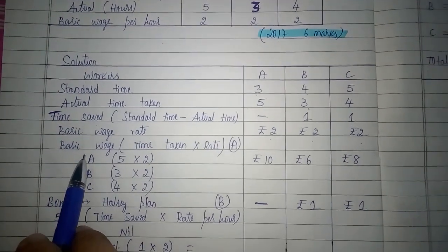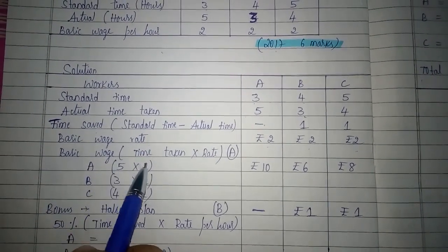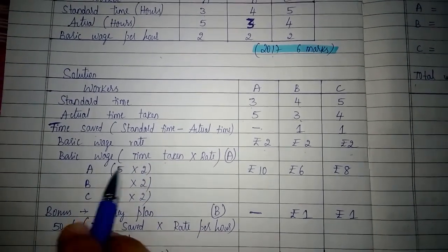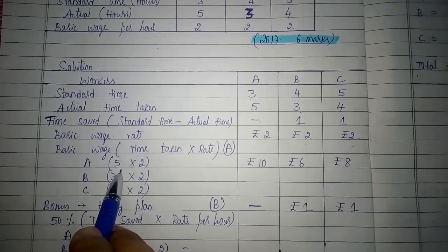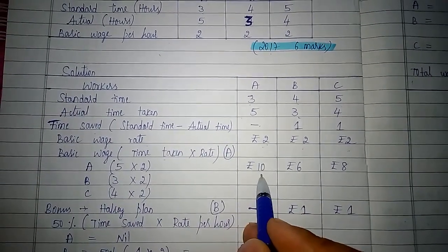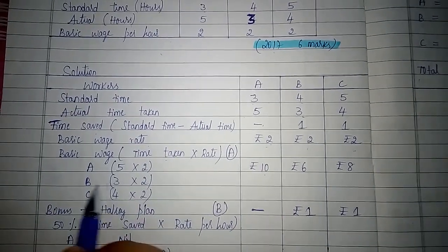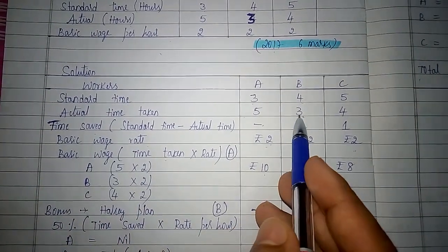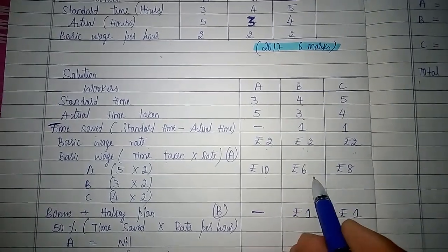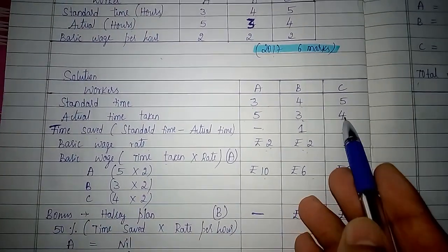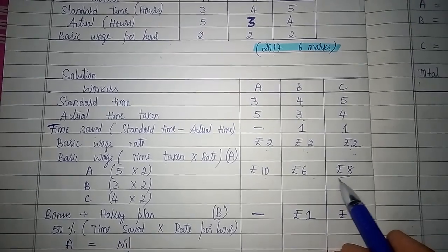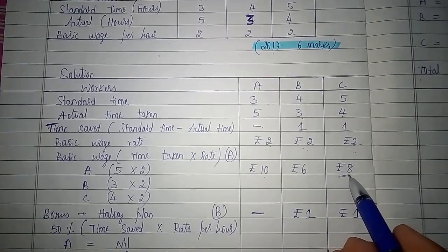Let us calculate basic wage by multiplying time taken and rate. A has taken five hours to complete the work and rate is two rupees, so his basic wage will be 10 rupees. B has taken three hours and rate is two rupees, so three into two will be six rupees. C has taken four hours to complete the work and rate is two rupees, so rupees 8 is the basic wage of C.